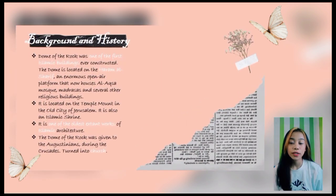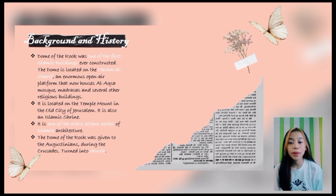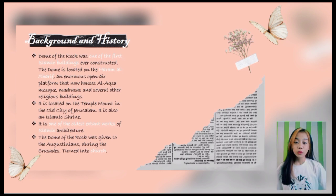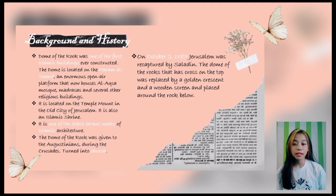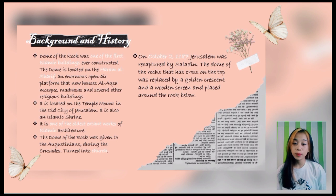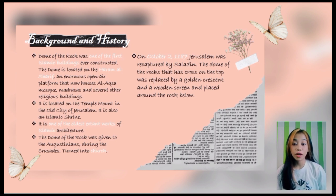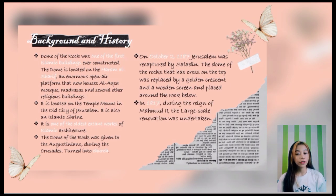The Dome was given to the Augustinians during the Crusades and turned into a church in 1104. Al-Aqsa Mosque became the Royal Palace of Baldwin I of Jerusalem. On October 2 of 1187, Jerusalem was recaptured by Saladin, and Haram was reconsecrated as a Muslim sanctuary. The cross on top of the Dome was replaced by a golden crescent, and a wooden screen was placed around the rock. In 1817, during the reign of Mahmud II, a large-scale renovation was undertaken.